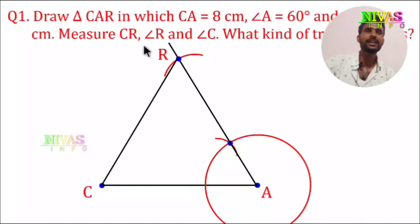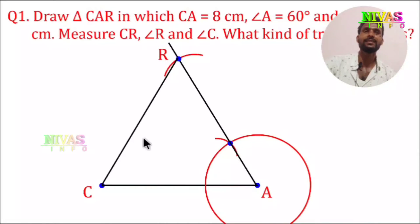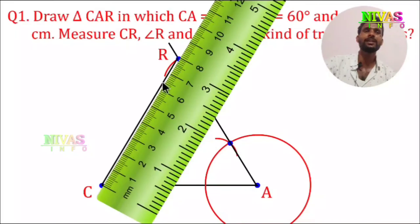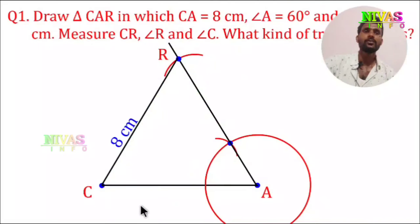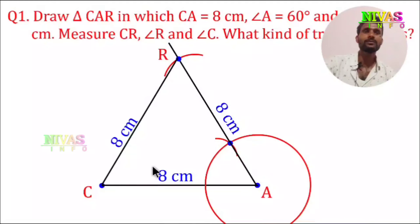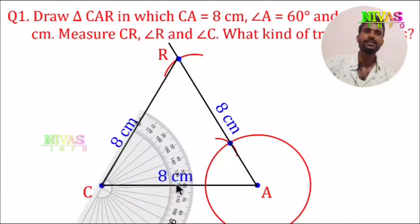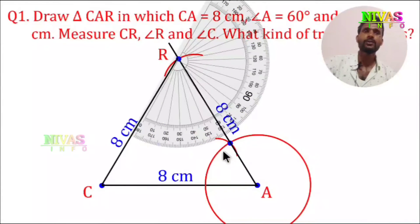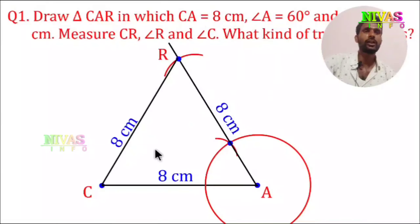Now we measure CR, angle C, and angle R. CR measures 8 cm. Angle C is 60 degrees and angle R is 60 degrees. So all sides are 8 cm and all angles are 60 degrees. We have drawn an equilateral triangle. This triangle is an equilateral triangle.